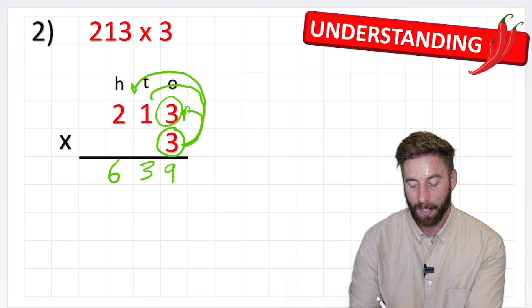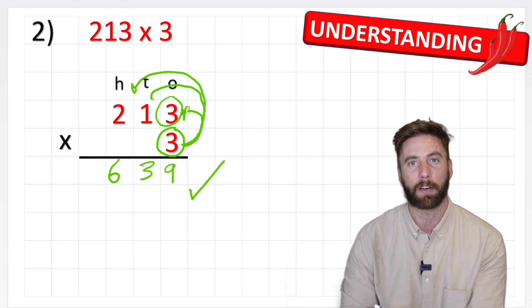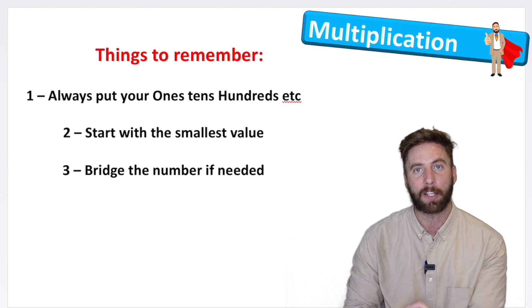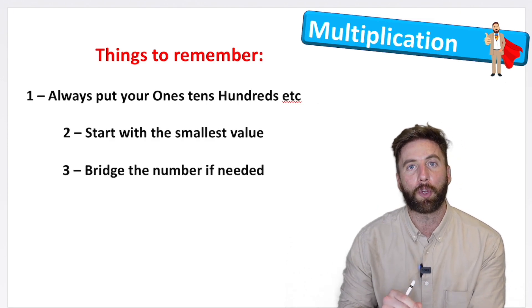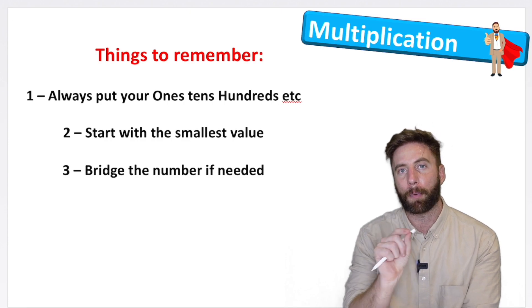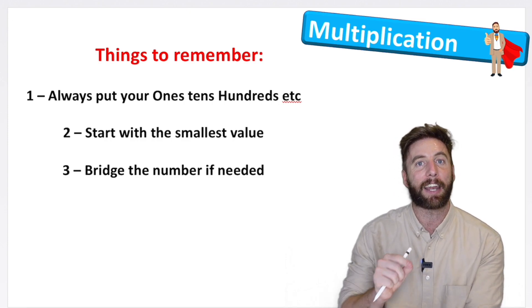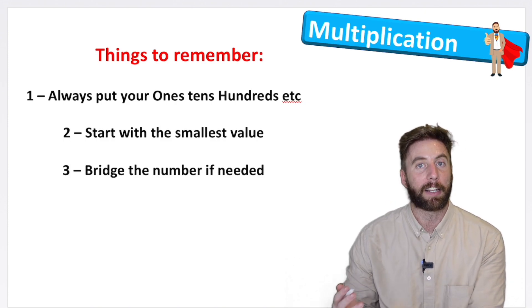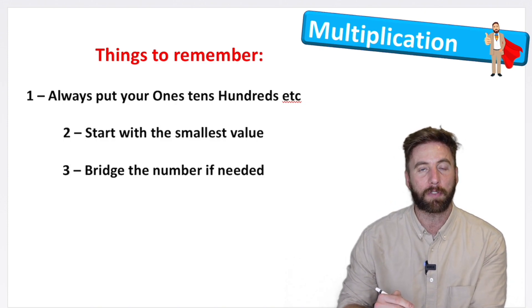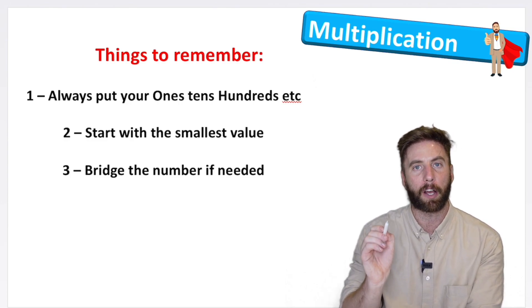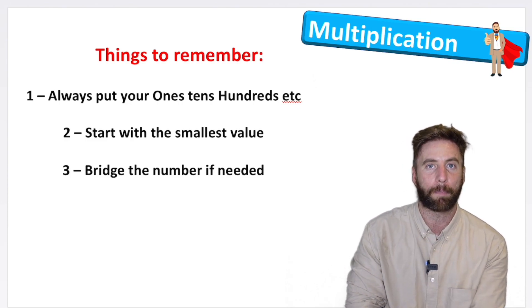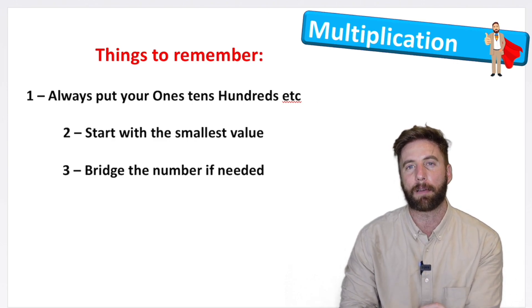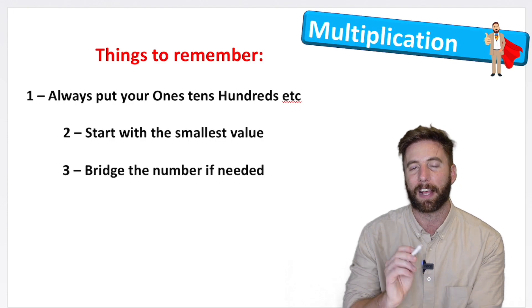So what are our things that we need to remember when working out these questions? Always put your ones, tens, and hundreds at the top of your place value chart. That will avoid making any mistakes and it will also tell you where to start, because remember we always start our smallest value. That leads me to my next thing to remember: start at the smallest value. So we start by multiplying our two smallest values and then we work our way up. And then finally bridge that number if we need to, but in this case we didn't because we were not regrouping. That's going to be on our next video.